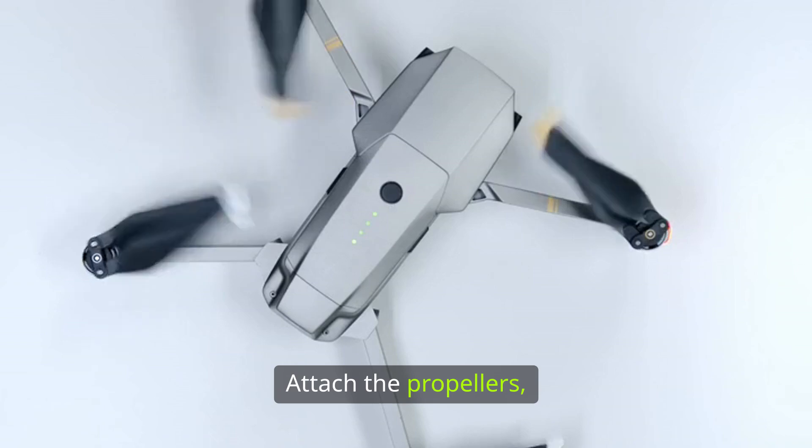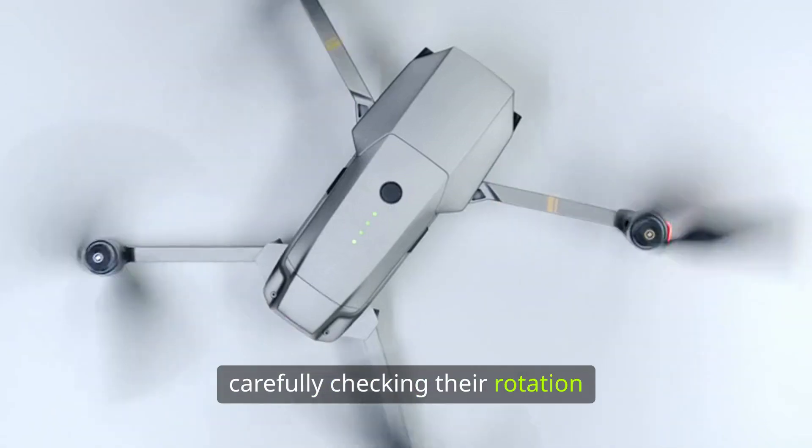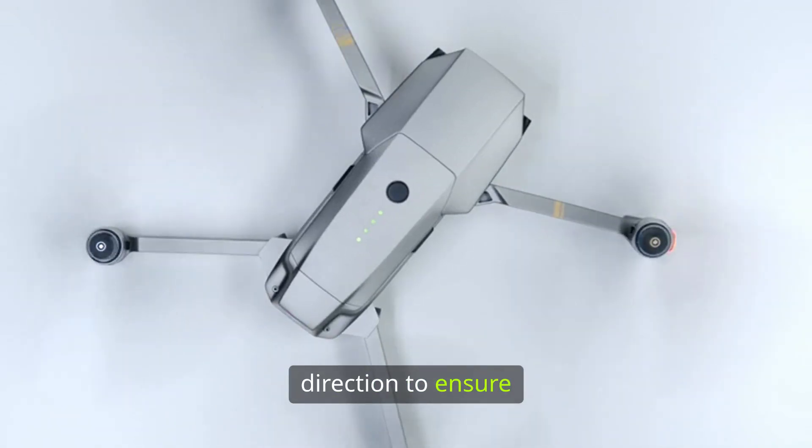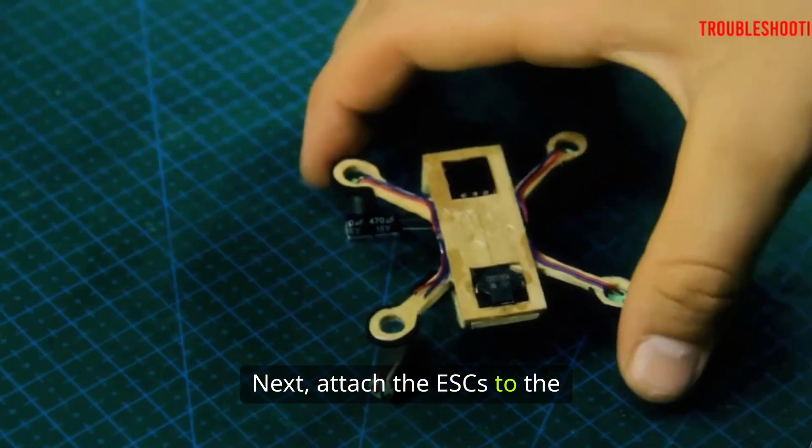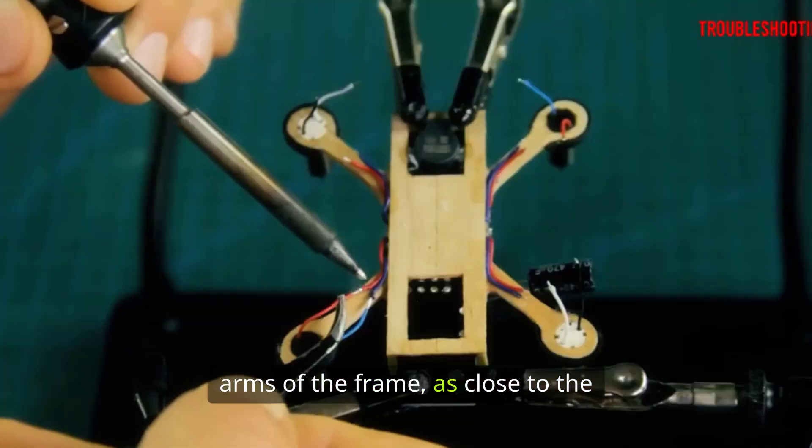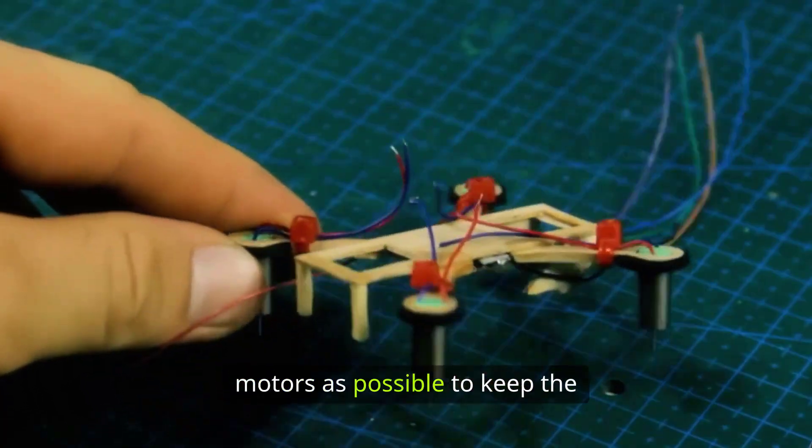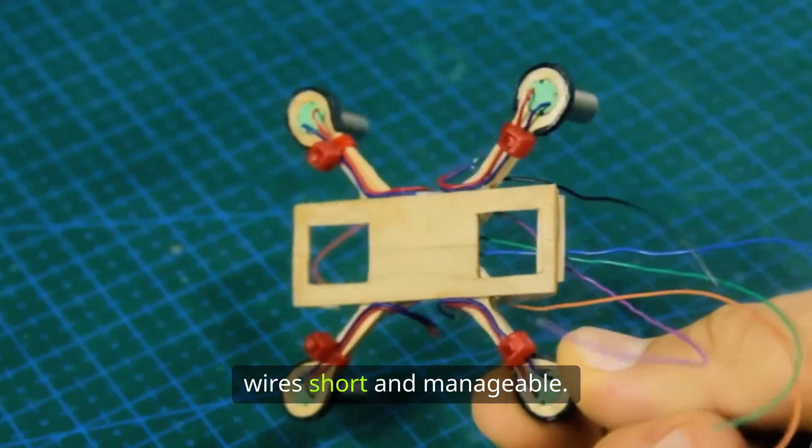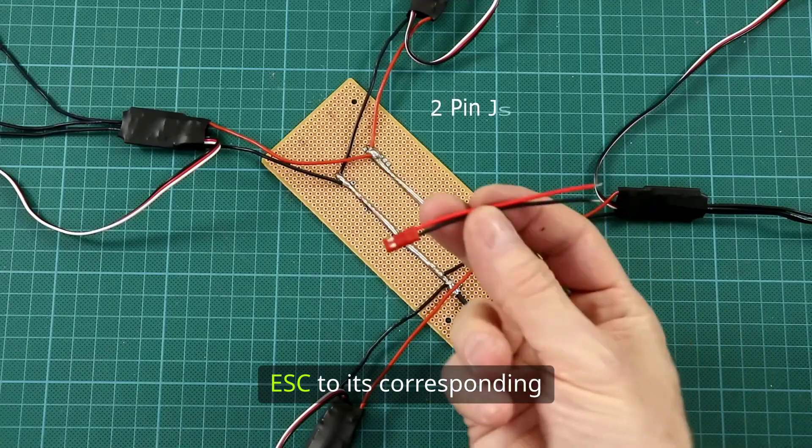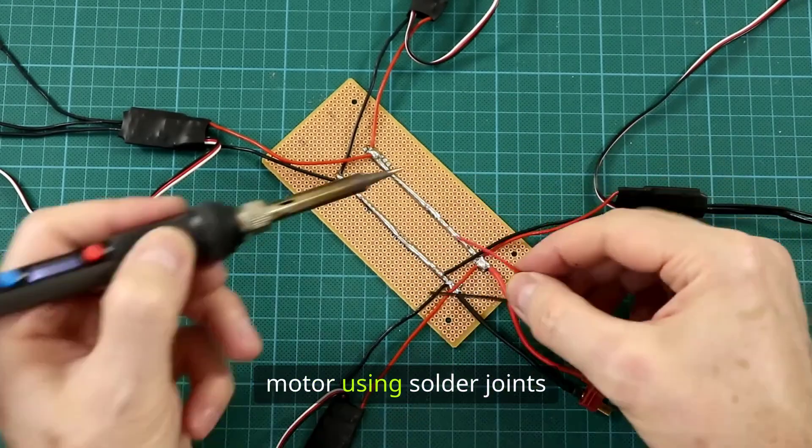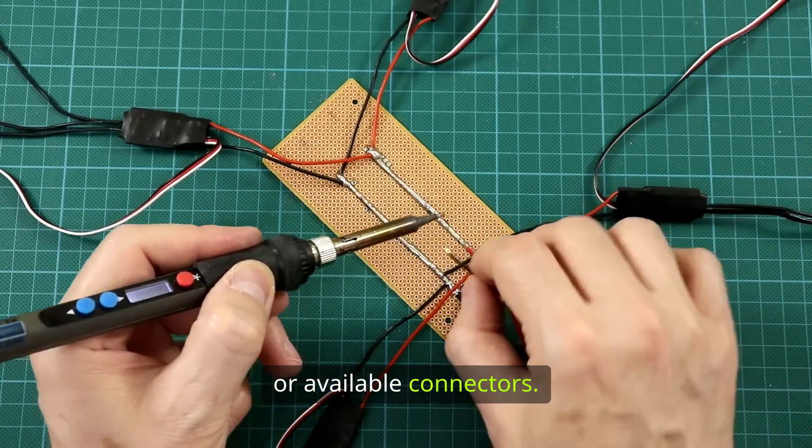Attach the propellers, carefully checking their rotation direction to ensure that two spin clockwise and two spin counterclockwise. Next, attach the ESCs to the arms of the frame, as close to the motors as possible to keep the wires short and manageable. Securely connect each ESC to its corresponding motor using solder joints or available connectors.